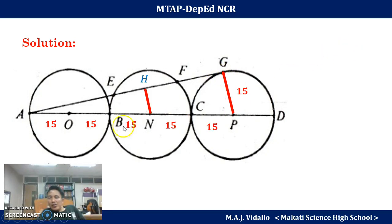Again, as I mentioned earlier, each radius is 15. Now, you already see it. Since this is perpendicular, this is perpendicular, we can say that triangle ANH is similar to triangle APG. Again, ANH is similar to triangle APG.